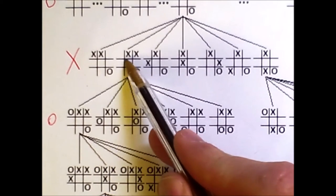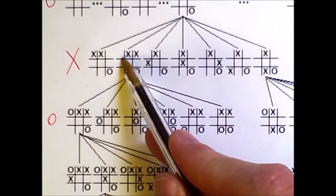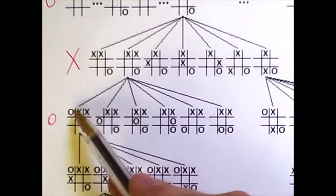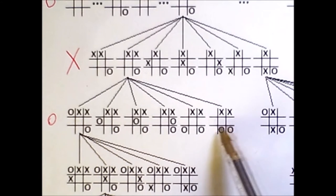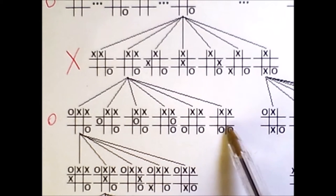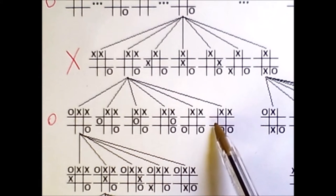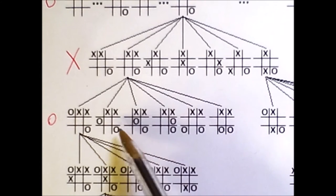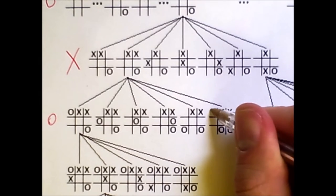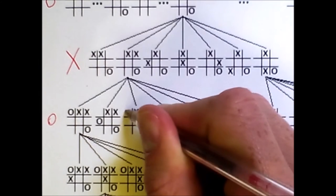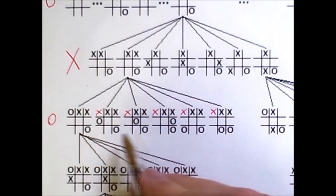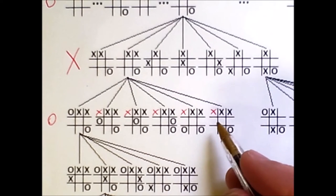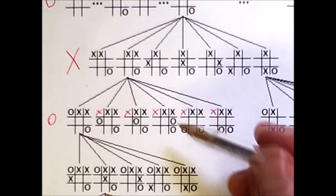Specifically, X is only one spot away from getting three in a row here. And if O makes any move other than to block that position, then X can immediately win. So these are all of the moves that O can make that do not block that position. And although I've not shown it, X can win one step beneath all of these states simply by playing in this upper left corner. So all of these states are victories for X. We'll see later how this information is used as we work our way back up the tree.